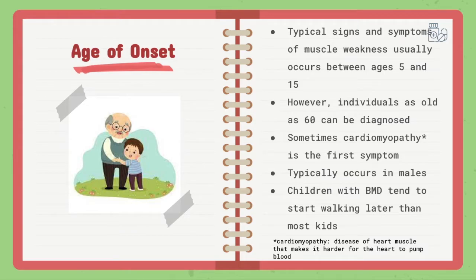The typical signs and symptoms of muscle weakness usually occur between ages 5 and 15; however, individuals as old as 60 can be diagnosed with BMD. Sometimes cardiomyopathy is the first symptom. Typically, this occurs in males. Children with BMD tend to start walking later than most kids.